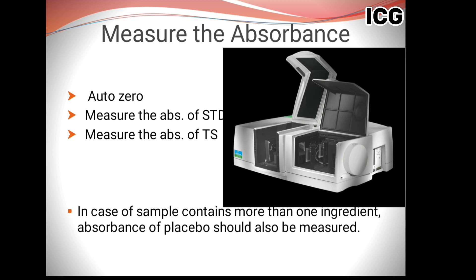During validation this is also a part of the process: you prepare a placebo, meaning all ingredients without the API. You weigh all those ingredients in the same ratio as your sample preparation. You run the placebo, and whatever absorbance it gives, you subtract that value from your sample absorbance value. When you subtract it, the resulting value is the net absorbance that should correspond to the sample's actual analyte.